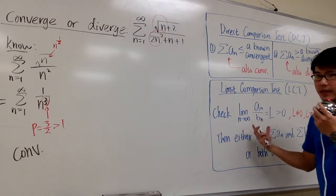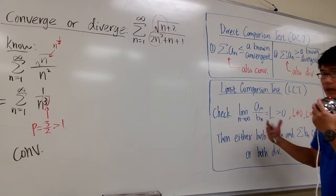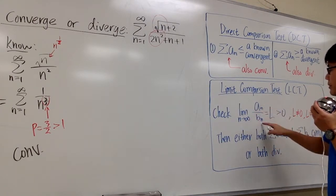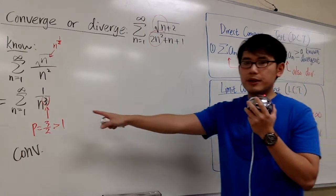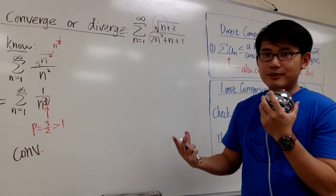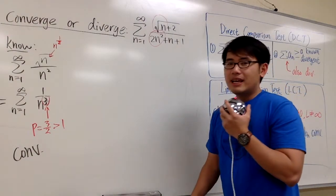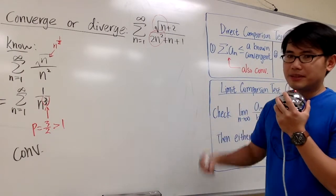The limit comparison test is a case where we just consider the limit, compute the limit of a_n and b_n, where b_n is something that we know much better. And usually, it may be easier. Let's go ahead and do the limit comparison test.